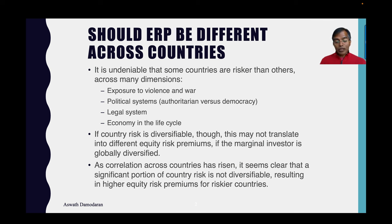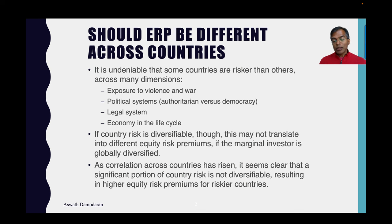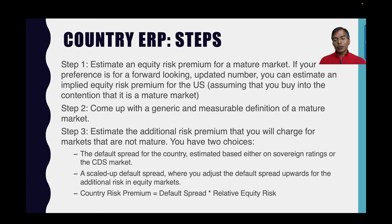What does that mean? Country risk is no longer diversifiable. You have no choice but to estimate equity risk premiums by country, giving higher equity risk premiums to riskier countries and lower ones to safer ones. That's what this data set contains — my estimates of the equity risk premium by country. I want to take you through the process of how I make this estimate, because it's mine and I could be wrong, and you're welcome to disagree with me.